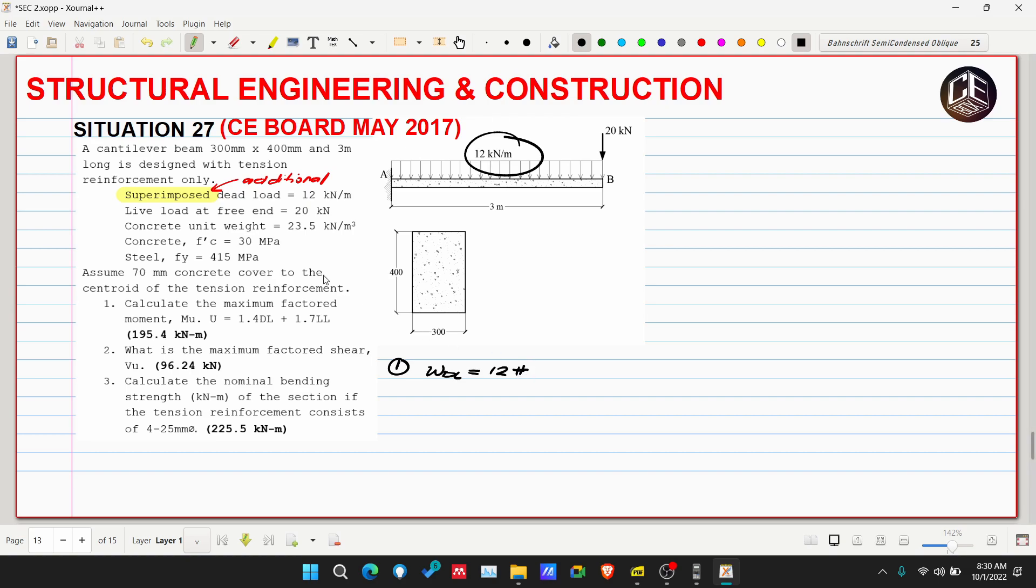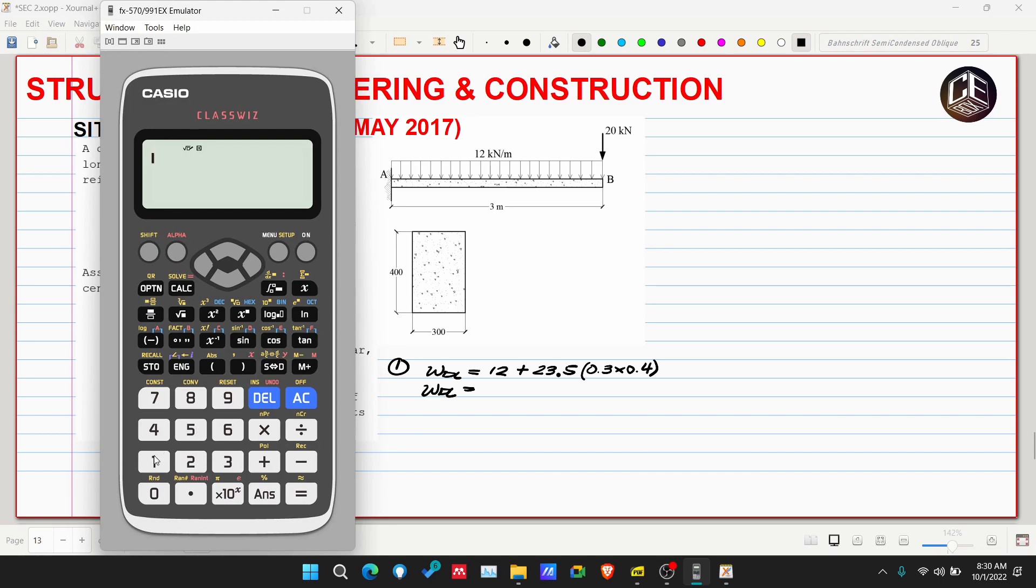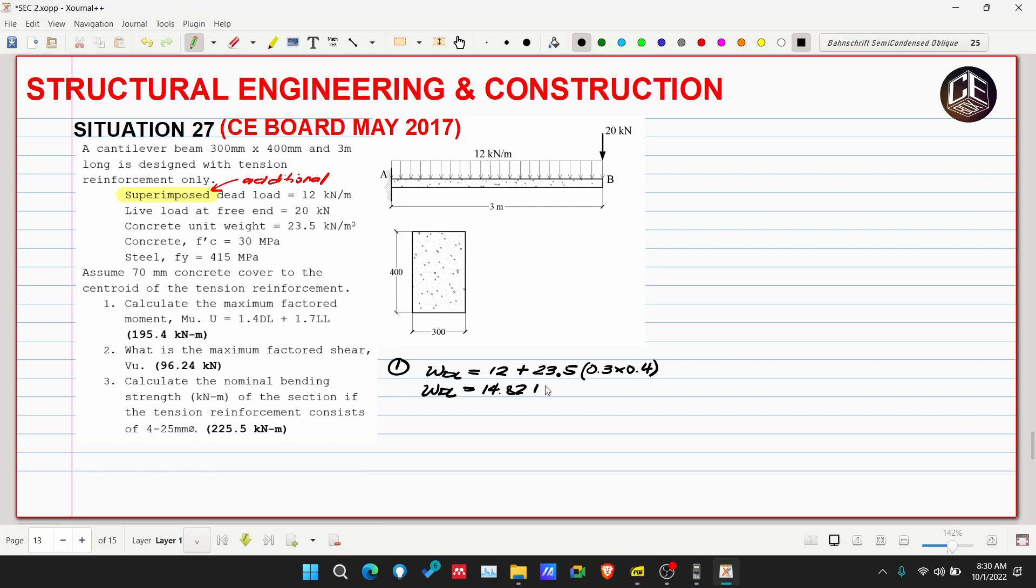Since we have the unit weight of 23.5 kN per meter cube, we need to multiply it by the area to get kN per meter. So plus 23.5 multiplied by the area of our beam, this is 0.3 by 0.4.